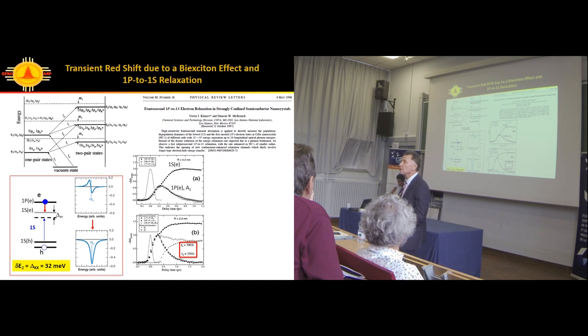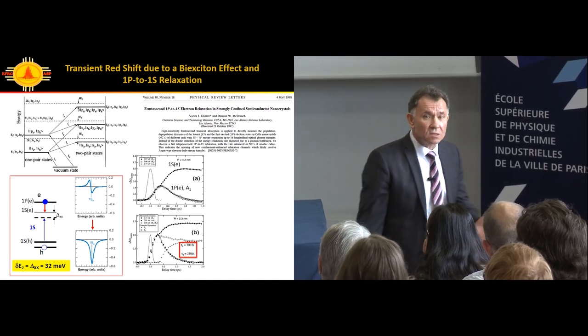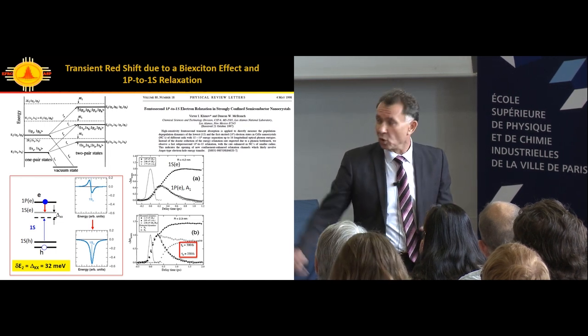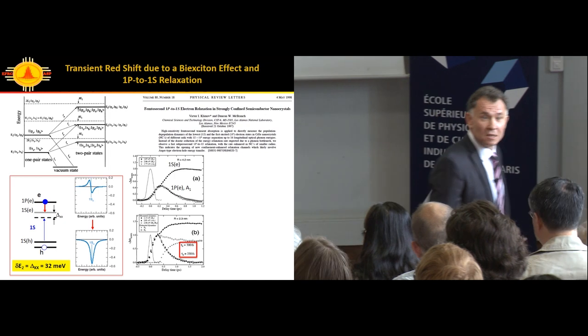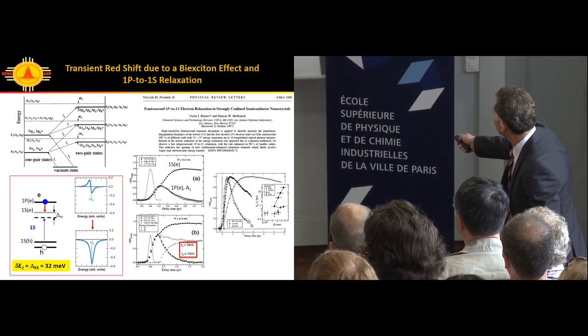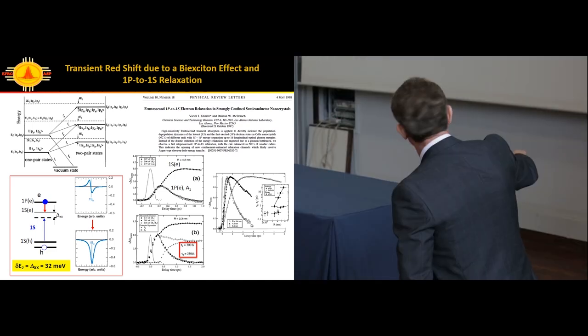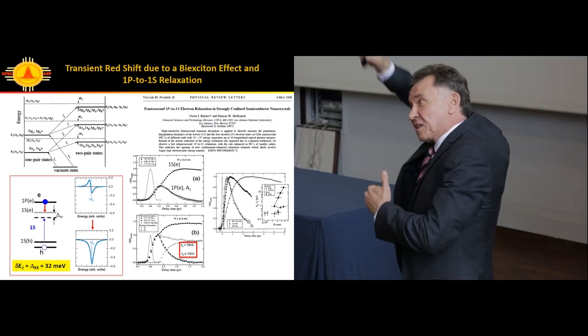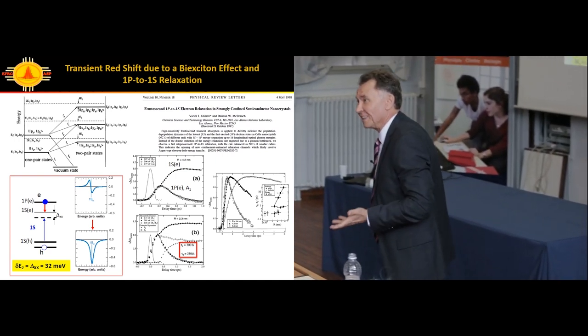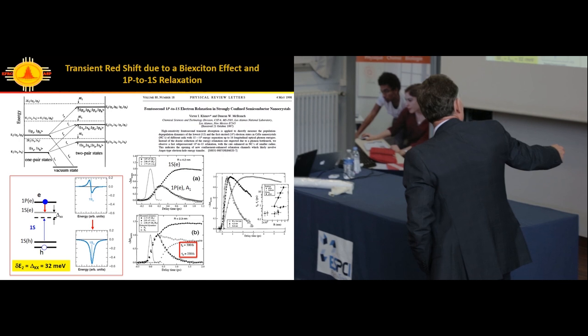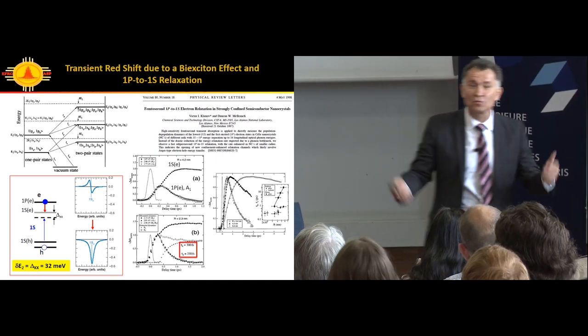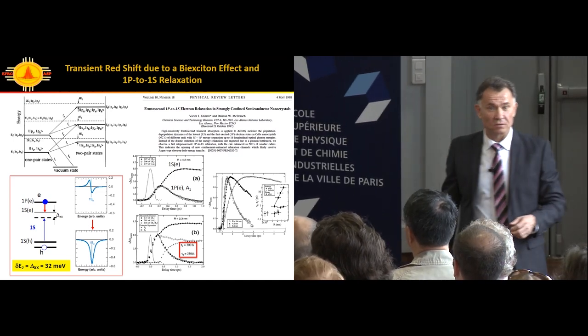This is for samples where 1S-1P splitting is 8 to 10 phonon energies. You would expect severe phonon bottleneck mentioned by Alexei. It did not happen. At that time we were looking at glass samples because we realized there's a size dependence. You make your sample smaller, you increase the gap between 1S and 1P state, you expect even more phonon bottleneck. Instead, something different happens. Relaxation becomes crazy fast.